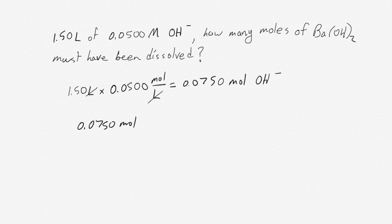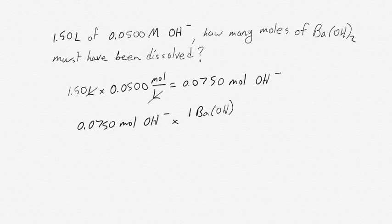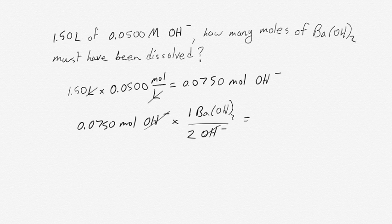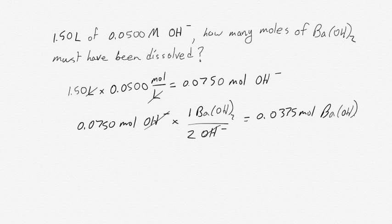So we have our data, 0.0750 moles of hydroxide ions. And we know that there is one barium hydroxide for every two hydroxide ions. Our hydroxides will cancel and we'll be left with a number of moles of barium hydroxide. So we end up with 0.0375 moles of barium hydroxide.